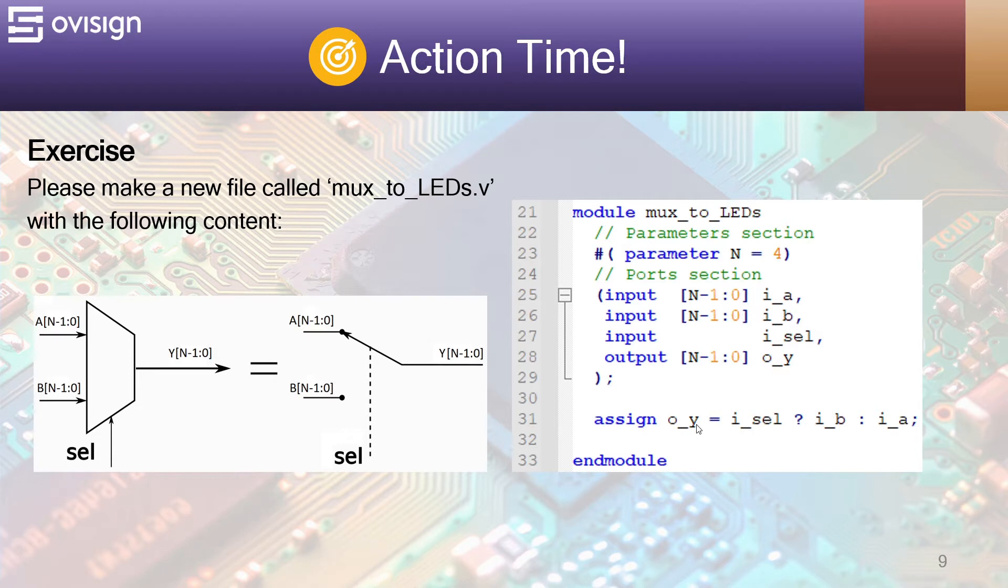So if i_sel is 0, y gets the value of a, otherwise gets the value of b. I hope that this explanation makes very clear for you how the conditional operator works.